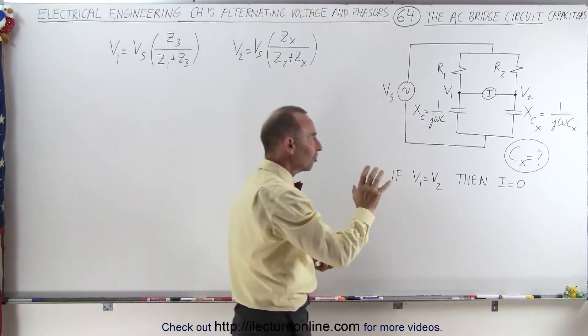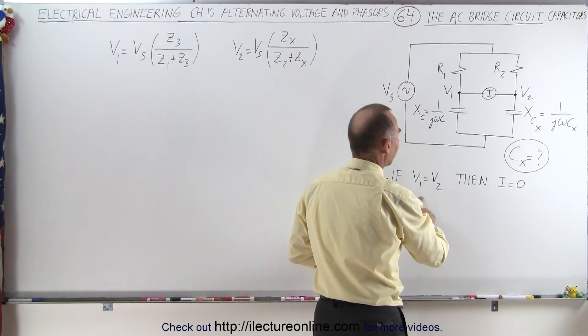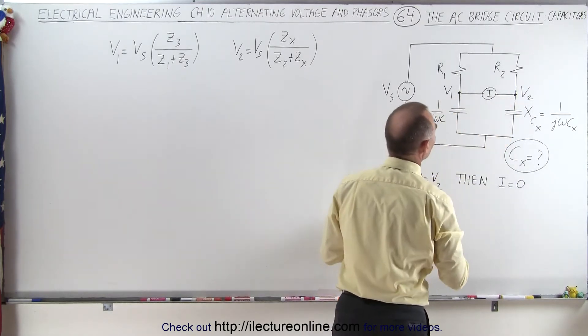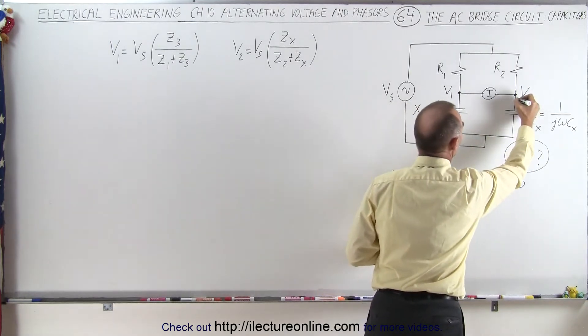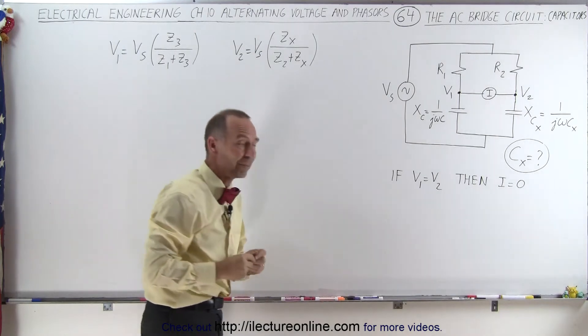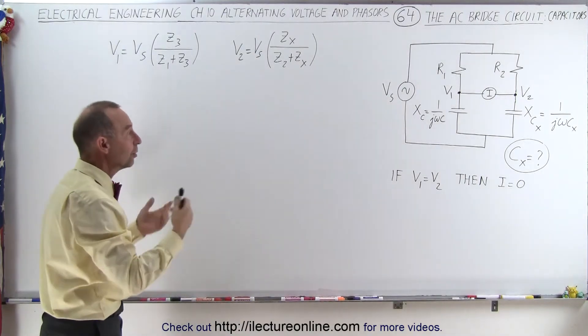Again, if we adjust the circuit appropriately, if V1 equals V2, if the voltages on both sides here are equal to one another, then there'll be no current flowing through the bridge. On the bridge portion, the current will go to zero. And that's how we find the unknown capacitor.